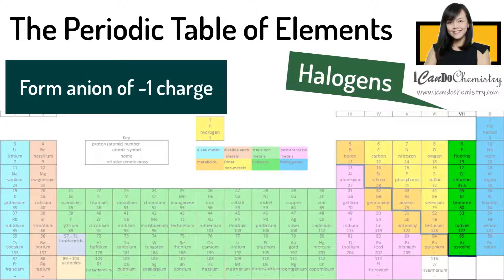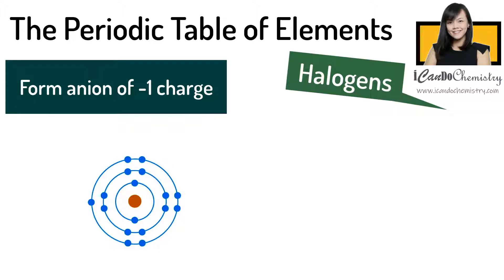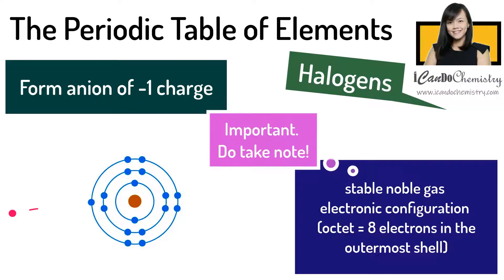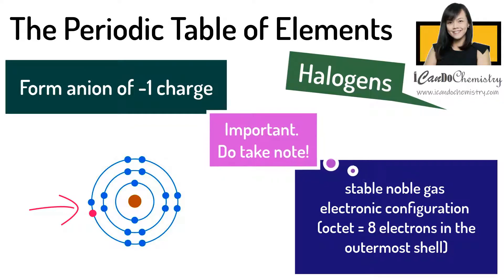Halogens form an ion with a charge of negative 1. Each halogen atom has 7 electrons in the valence shell. One electron is taken in to achieve a stable noble gas octet electronic configuration.